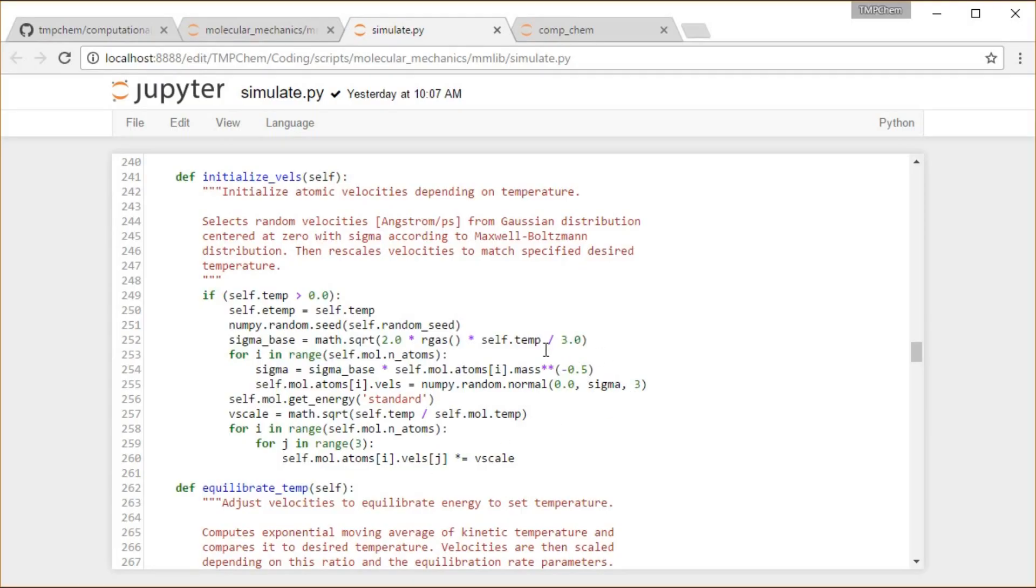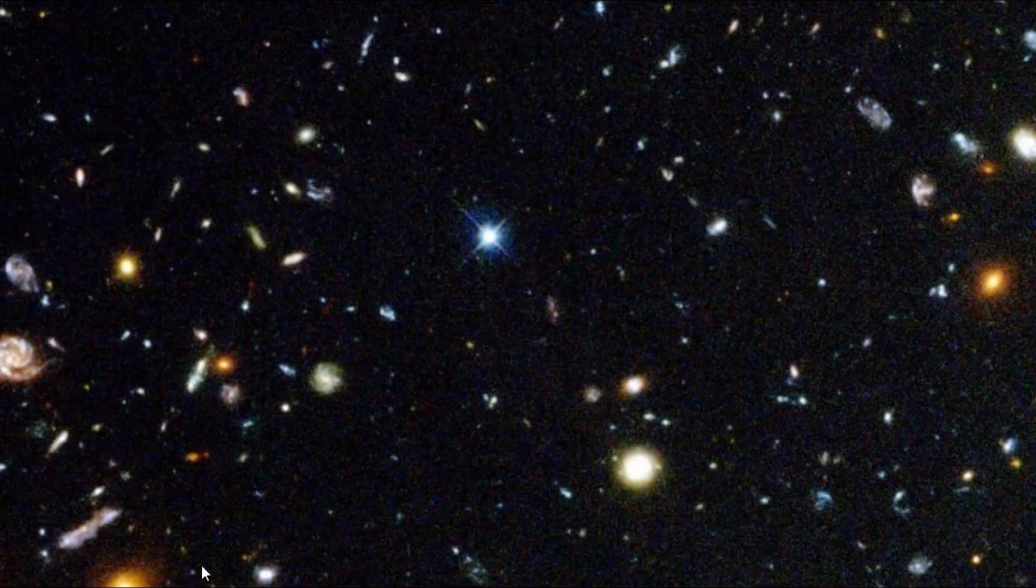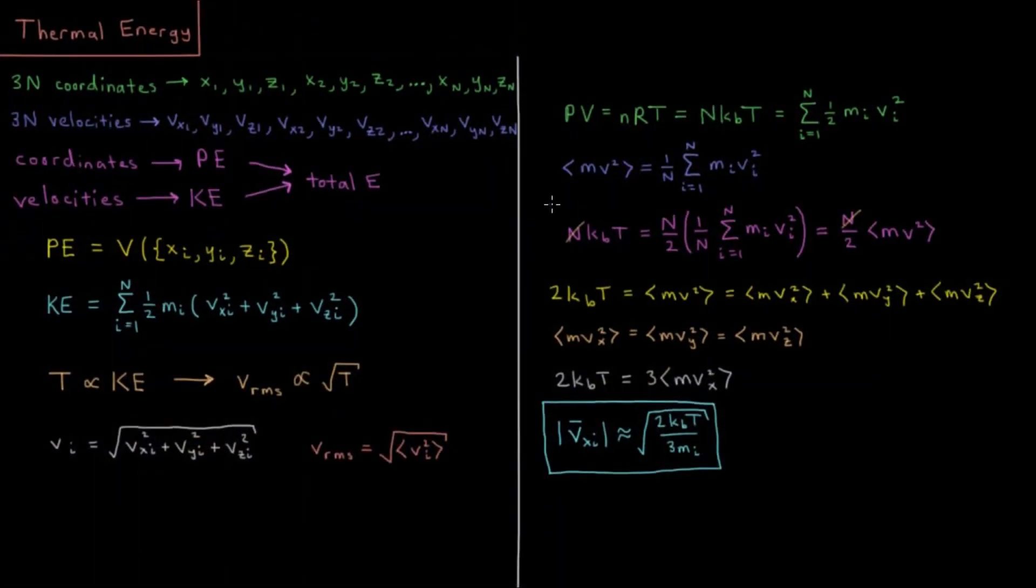And then using that basically to assign a random value according to some Gaussian distribution with that type of uncertainty for three coordinates of each of the atoms. So when we start looking at molecular dynamics in a few videos, this is where our initial velocity assignments are going to come from.